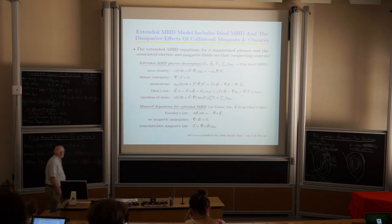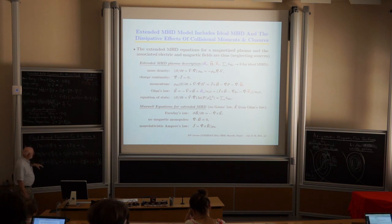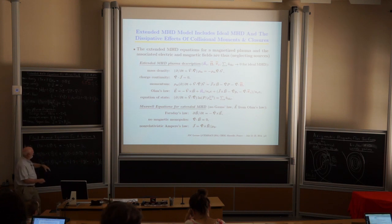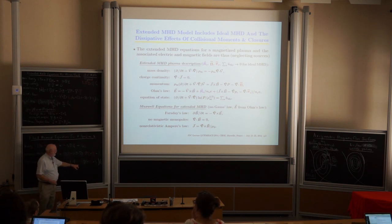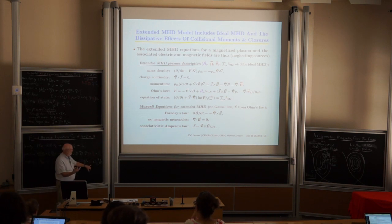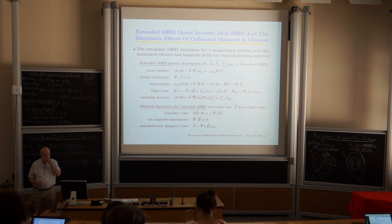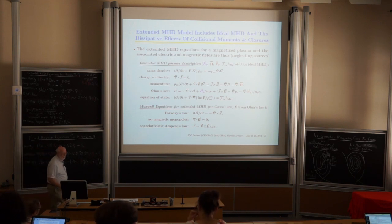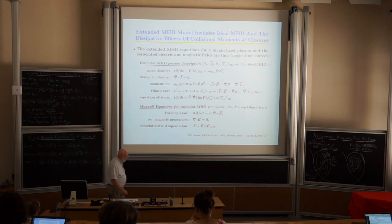Taking the entropy equations for each species and summing them gives us that the time rate of change of the total plasma entropy equals all the entropy-producing processes: heat conduction against gradients, viscous dissipation, electron-ion energy transfers, and sources of energy like neutral beam heating. This is what we call the extended MHD equations.